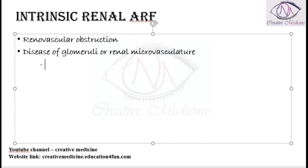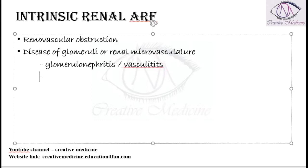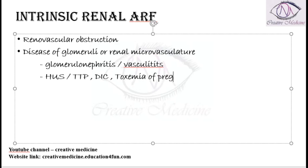Any type of glomerulonephritis can result in intrinsic renal acute renal failure, or any type of vasculitis affecting the kidney can cause this. It can also occur due to hemolytic uremic syndrome, thrombotic thrombocytopenic purpura, disseminated intravascular coagulation, or toxemia of pregnancy, and in malignant hypertension.